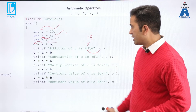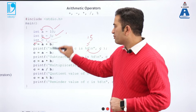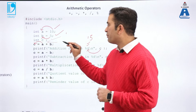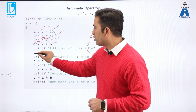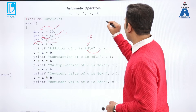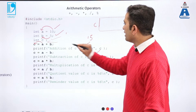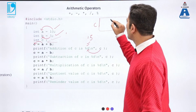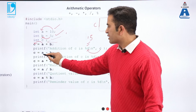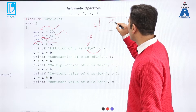The second statement is c equal to a minus b. Now 10 minus 5 is 5. It will override the previous value of c, which was 15, and update the value of variable c to 5. In the pictorial representation of variable c, the first instruction a plus b saved 15 in c. Now the second instruction a minus b gives 5, so it overwrites and the updated value of c is 5.